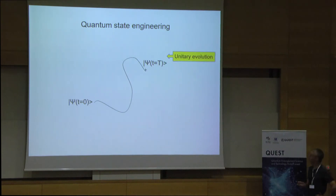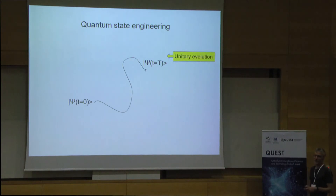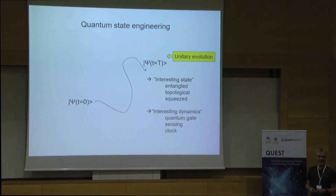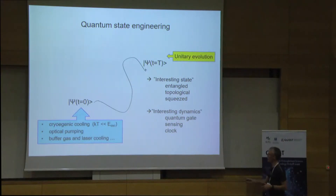When we want to engineer a quantum state, very often we refer to maybe some initial state and some target final state, and we talk about the perfect unitary evolution that takes us from here to there. But before you even start that perfect unitary evolution, you have to start somewhere. The initial state for many experiments is also a pure state, and the way we prepare our initial state of atoms is to wait for these atoms to fall into their ground state by dissipation. Any interesting state — entangled, topological, squeezed — any interesting dynamics, gate process, sensing, or clock, actually often has to start in a kind of ground state or steady state that the system has arrived at because of dissipation. Maybe you have cryogenically cooled your qubits in your superconducting device, maybe you have optically pumped your atoms, or used buffer gas or laser cooling.